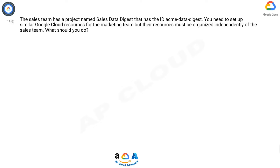Question 190. The sales team has a project named Sales Data Digest that has the ID acme-data-digest. You need to set up similar Google Cloud resources for the marketing team, but their resources must be organized independently of the sales team.